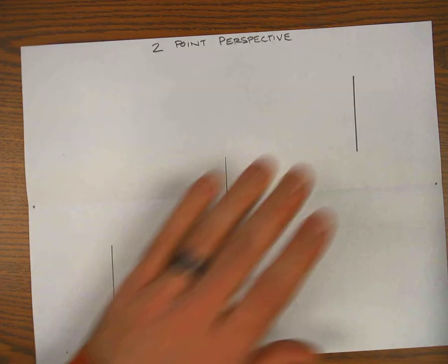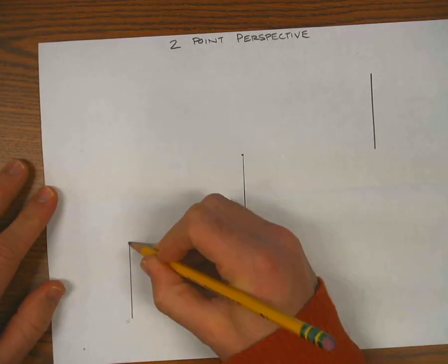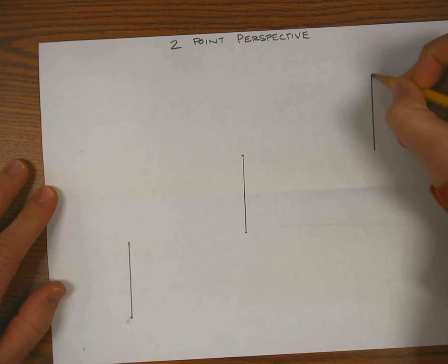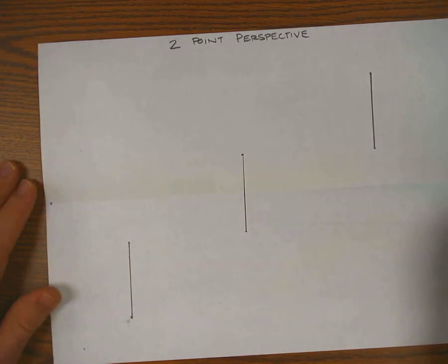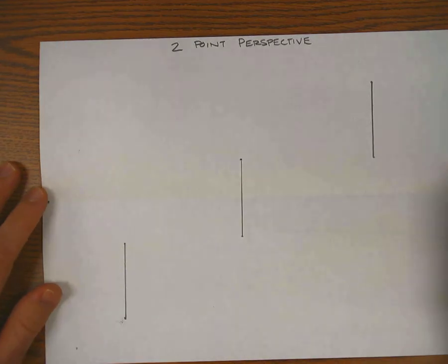And our rule for this assignment is on the top and bottom of each of these vertical lines, we have to draw two lines that connect to both vanishing points. So the top and bottom of each line connect to both vanishing points.